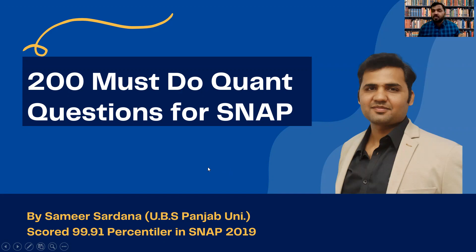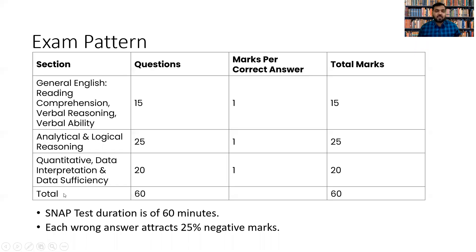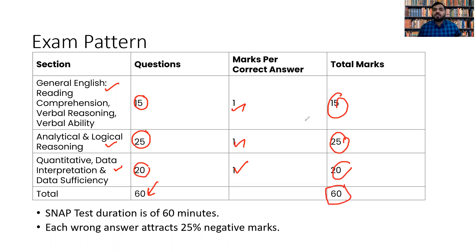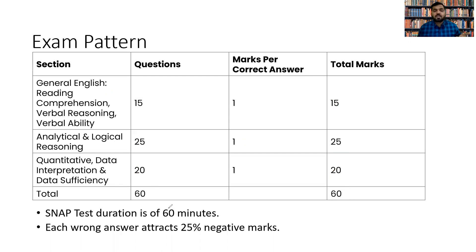To cover the complete quant, I will be selecting 200 must-do quant questions for SNAP covering all relevant concepts. Now starting with the strategy — look at the exam pattern first. There are three sections: English, Analytical and Logical Reasoning, and Quant/Data Interpretation. There are 15 questions in English, 25 in reasoning, and 20 in quant — 60 total questions, 1 mark per correct answer, for a 60-minute test.